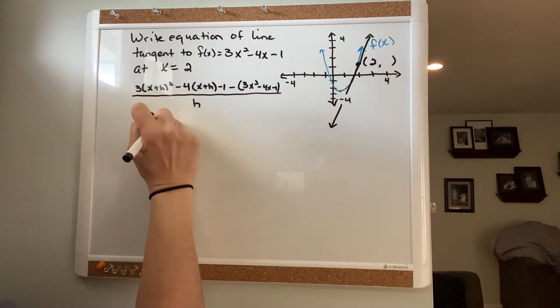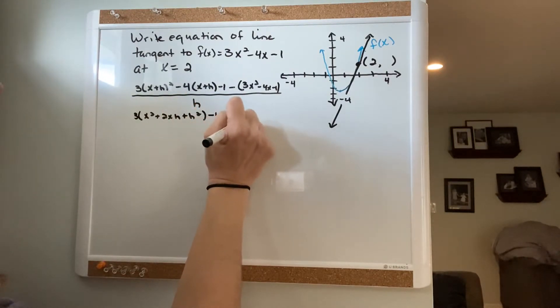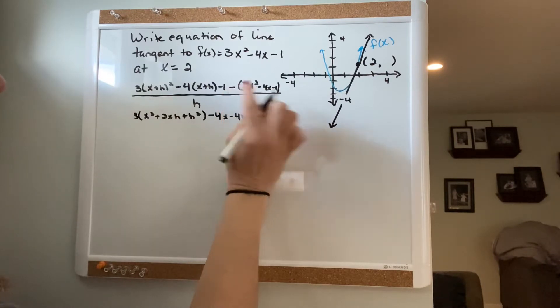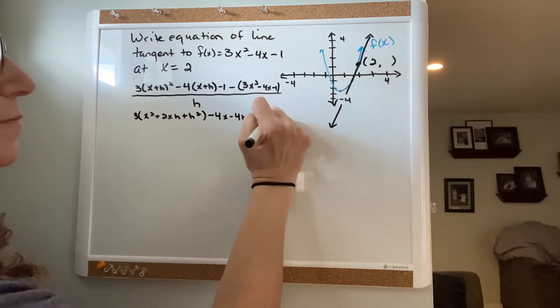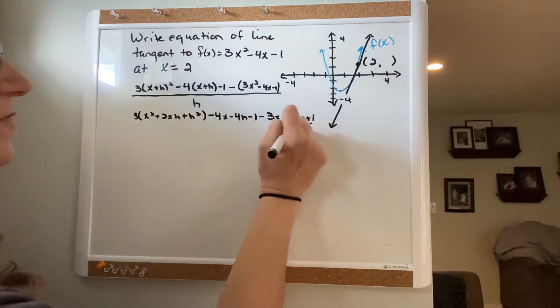Distribute the 4 through: minus 4x minus 4h minus 1, and then distribute this negative: minus 3x² plus 4x plus 1, all over h.